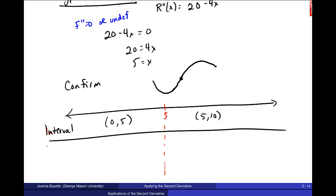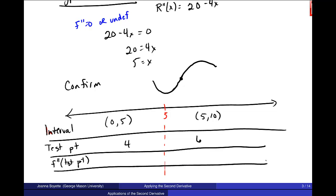Then I'm going to test. Get a test point. Let's test 4 and 6. And let's go ahead and find f double prime of the test point to test for concavity. So f double prime is 20 minus 4x. So this would be 20 minus 4 times 4, which is 4. 20 minus 4 times 6 is negative 4.